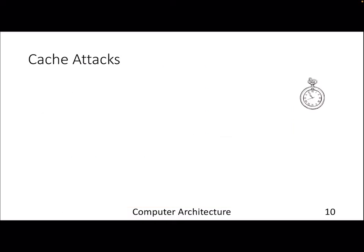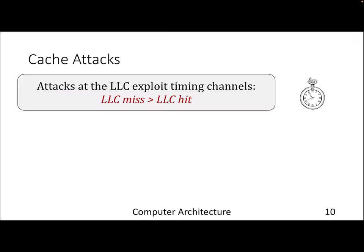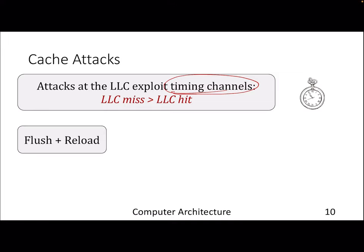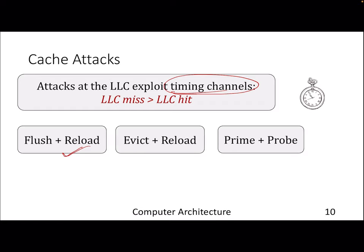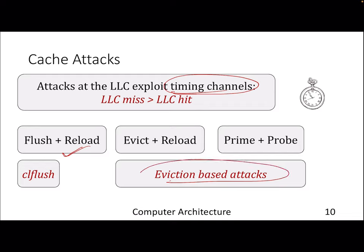Based on the fast access, the attacker infers that the victim accessed that particular cache line or set. There are various cache attacks that exploit timing channels, mostly using the last-level cache hit-and-miss difference, since that is easier to differentiate than private cache hit-and-miss. Besides the Flush+Reload attack, there are eviction-based attacks where you don't share anything with the victim — instead, since you share the LLC and DRAM, you evict everything the victim brought into the cache and observe future accesses.